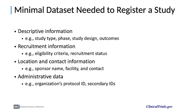Records must contain, at a minimum, descriptive information about the study, including the study type — for example, whether the study is interventional or observational — the phase, the study design, and the pre-specified outcome measures. They must also include recruitment information, including the eligibility criteria and recruitment status, the sponsor name, the study locations and contact information for those interested in learning more about study participation, and administrative data, such as the numbers used to identify the study, including any grant IDs or IDs assigned by other trial registries.